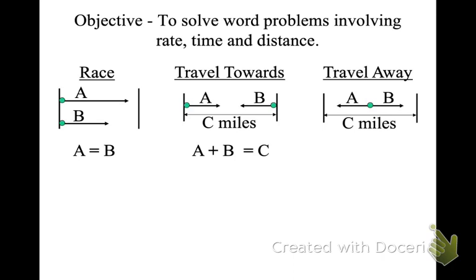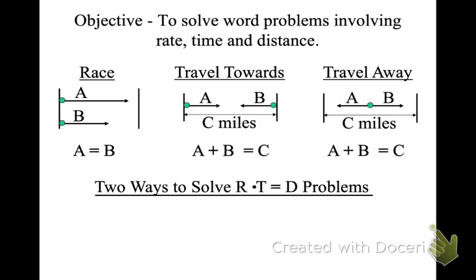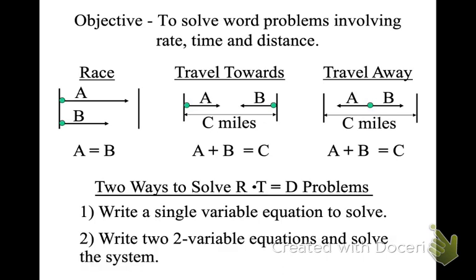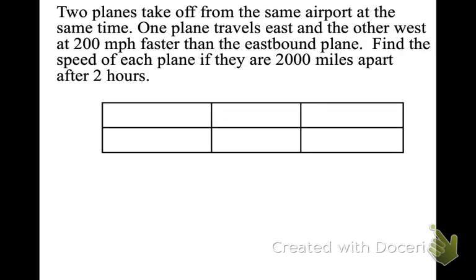We also have the situation where they're traveling away from each other — distance A plus distance B makes the total distance C. There are two ways to solve rate times time equals distance: we can solve it with one variable, or we can solve it with two variables. I'll show you both ways.